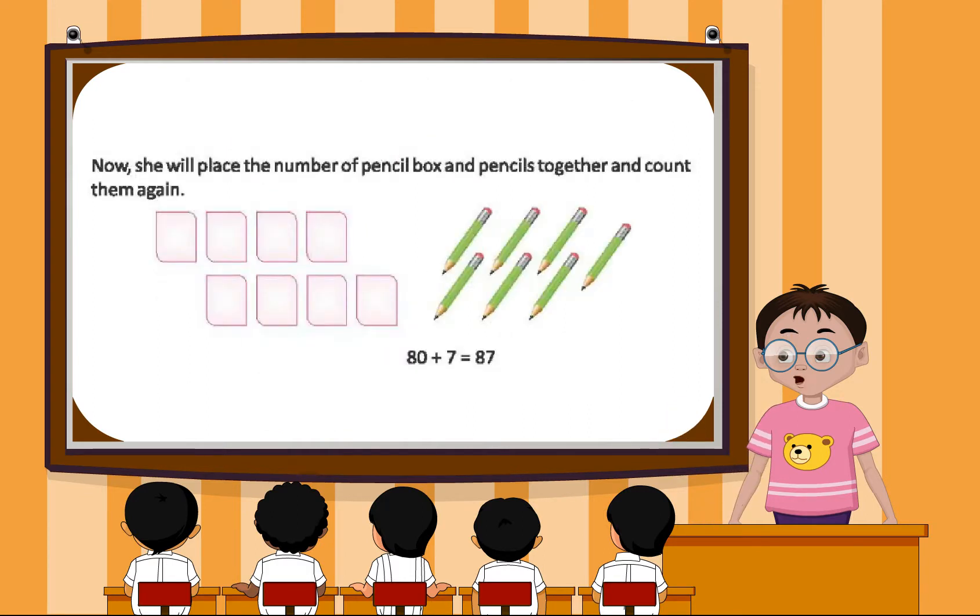Now, she will place the pencil boxes and pencils together and count them again. 80 plus 7 equals 87.